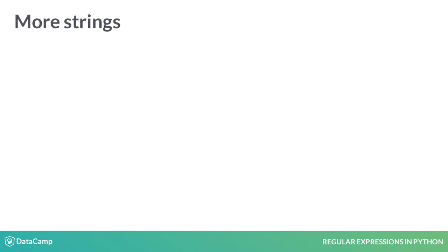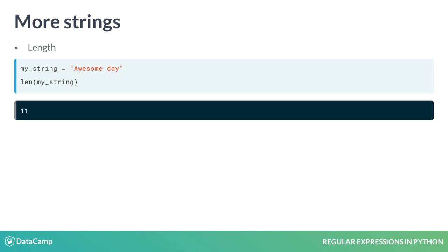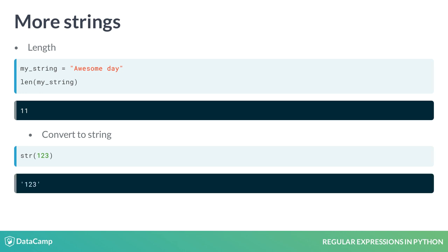Python has built-in functions to handle strings. Suppose we define the following string. We can get the number of characters in the string by applying the function length, which returns 11, as shown in the output. The function str returns the string representation of an object as seen in the code.